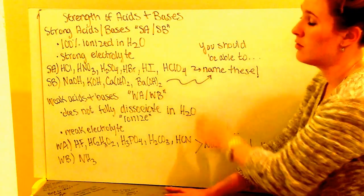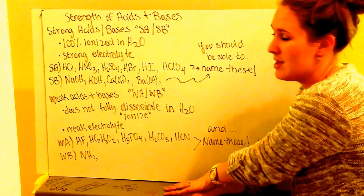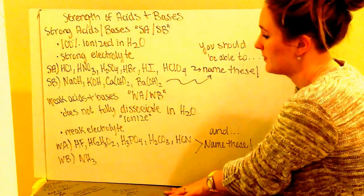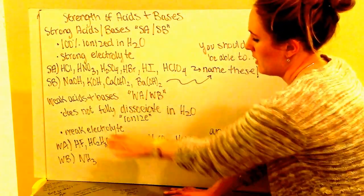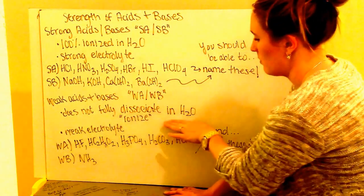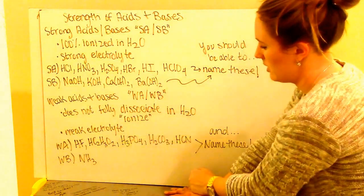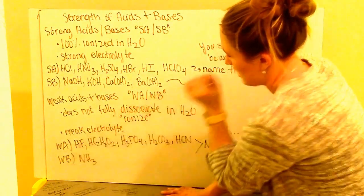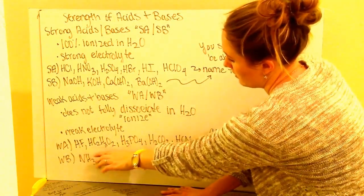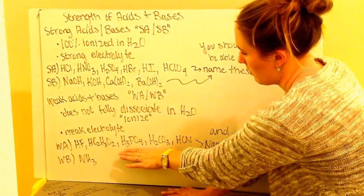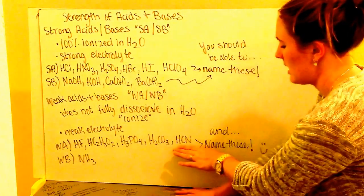Again, you should be able to know all of these. You have all of your polyatomics on your sheet, just a matter of understanding how to name them. And that was one of the worksheets we'll go over. Weak acids and bases are abbreviated WA or WB. These do not fully dissociate in water or ionize in water. They are weak electrolytes. Some examples of weak acid is HF, HC2H3O2 or acetic acid, H3PO4 which is phosphoric acid, H2CO3 which is carbonic acid, and HCN.